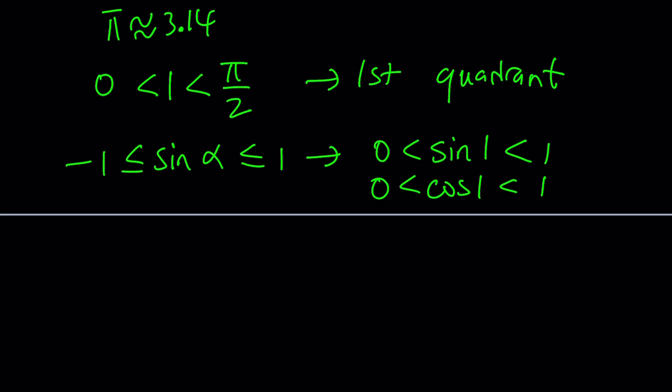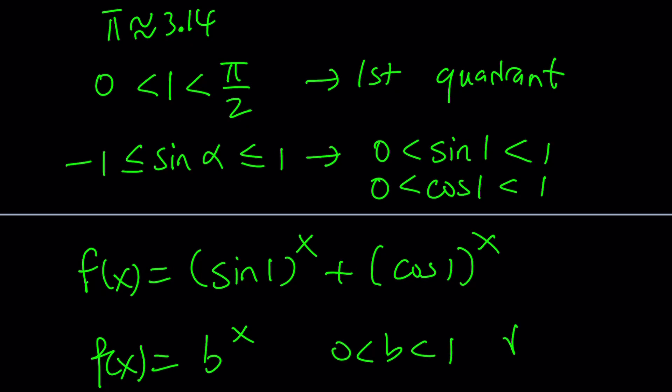But what's more important is that if you look at this as a function, sine 1 to the power x plus cosine 1 to the power x. Sine 1 and cosine 1 are both between 0 and 1, which means whenever you have a function like f of x equals b to the x and b is between 0 and 1, it is a decreasing function whose graph looks like this. Make sense? Otherwise, the graph is going to be increasing.